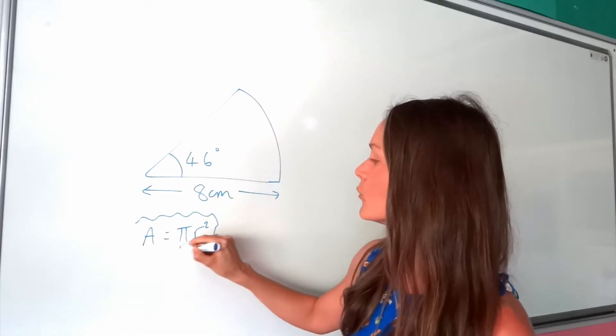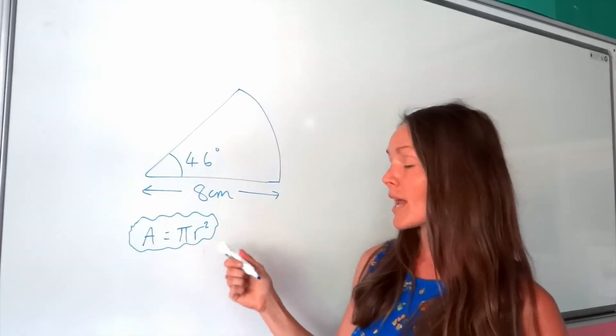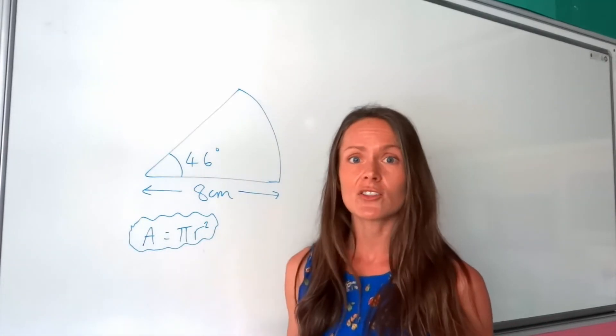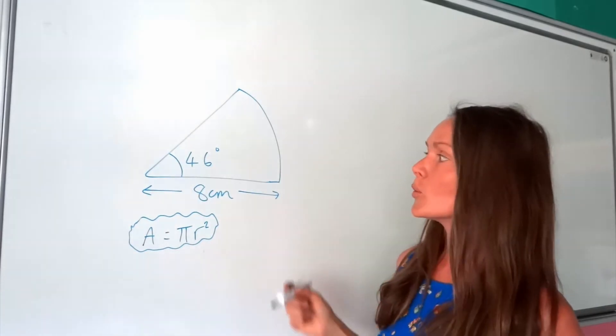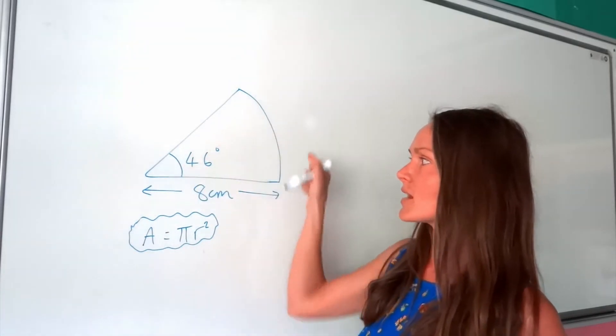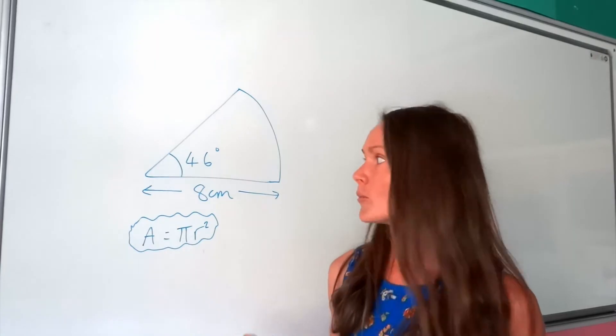So if we use that formula, that will calculate the area of an entire circle. Well here we only want the area of part of that circle, just a slice taken from the circle.